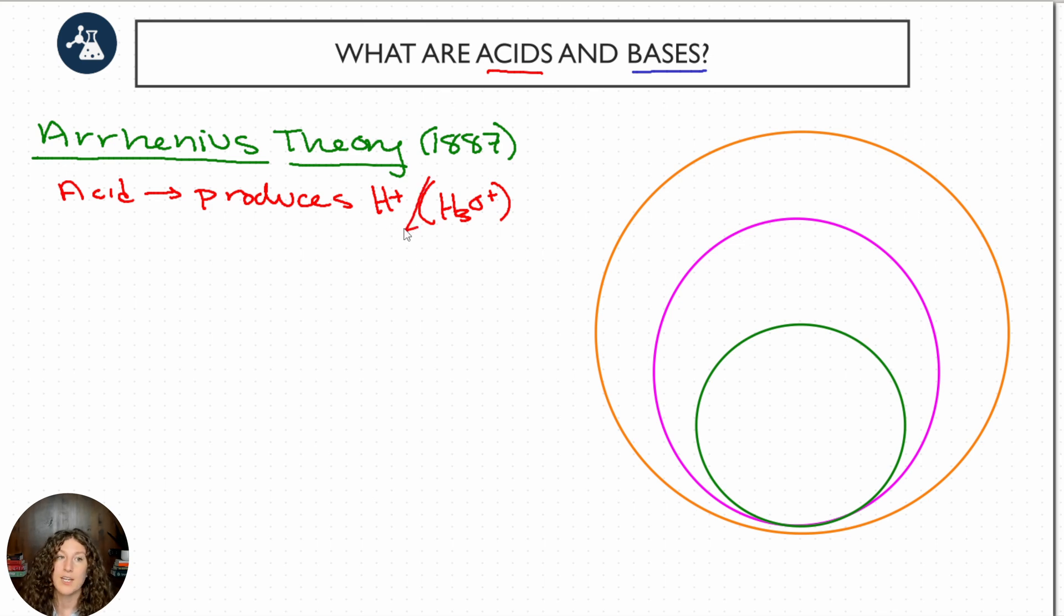We'll use these interchangeably, H plus and hydronium ions. Just know that in real solutions it looks like this. We don't really have protons just floating around. A common example here could be HCl, hydrochloric acid. When it ionizes, it produces H plus and Cl minus. So that H plus lets us know this is an Arrhenius acid.